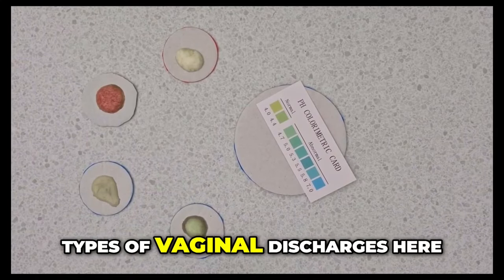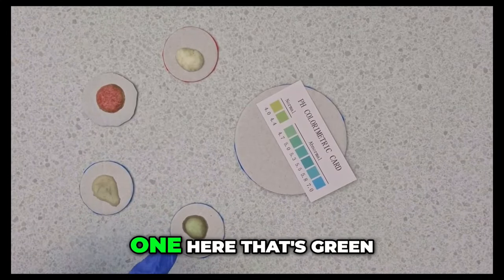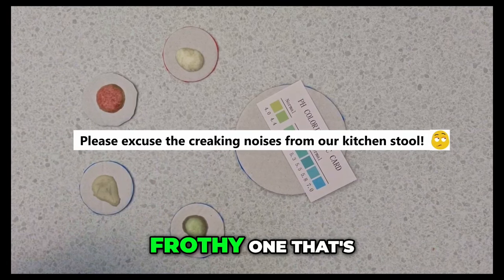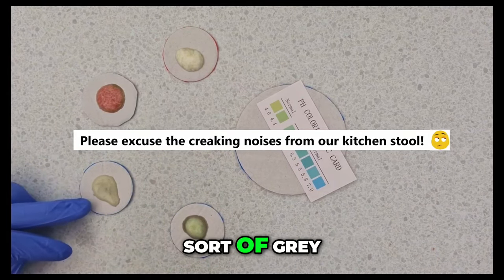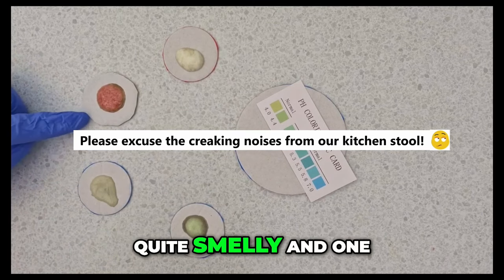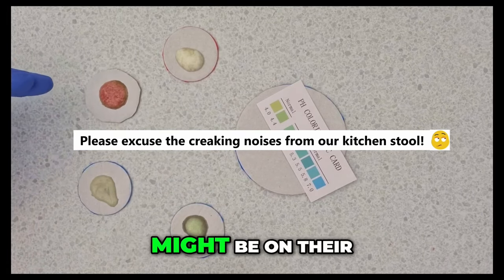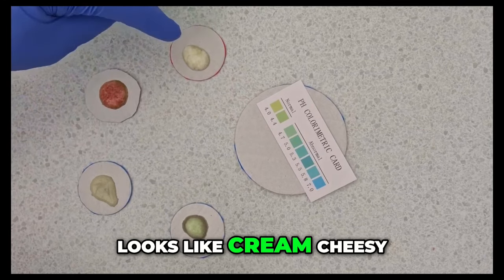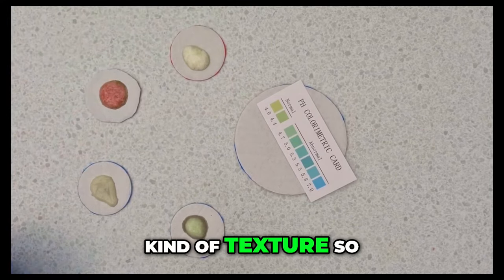So we have different types of vaginal discharges here. One here that's green and a little bit fussy. One that's sort of grey, yellowy color here and quite smelly. And one that looks like somebody might be on their period. And then this looks like cream, cheesy kind of texture.